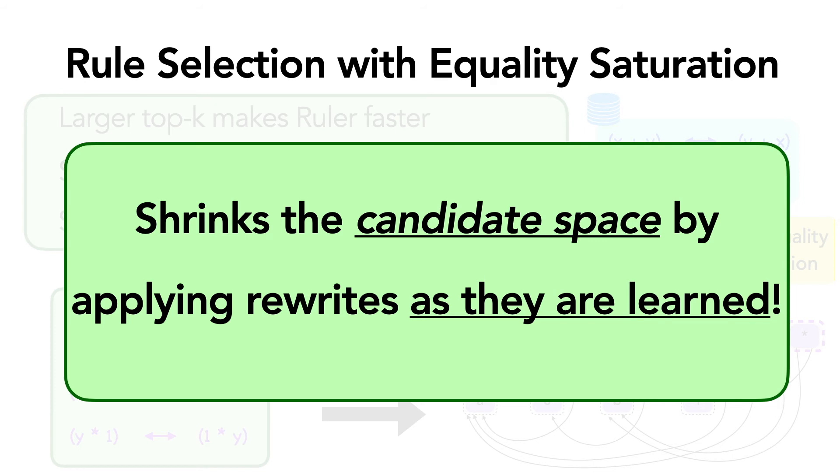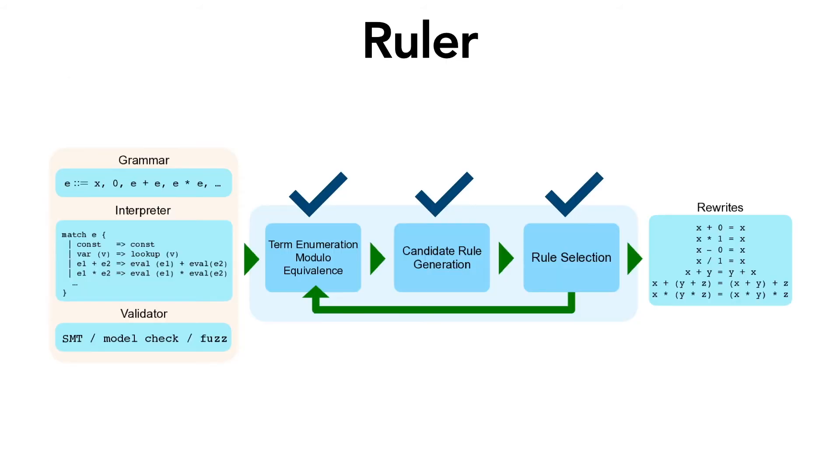So the key insight from this part is that Ruler uses equality saturation not only to shrink the term space, but also to shrink the candidate rule space dynamically as it is learning the rules themselves. These two ways of using equality saturation are largely responsible for Ruler's performance. So that's how Ruler works.